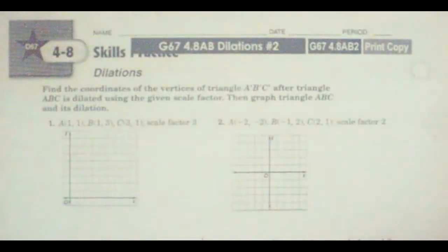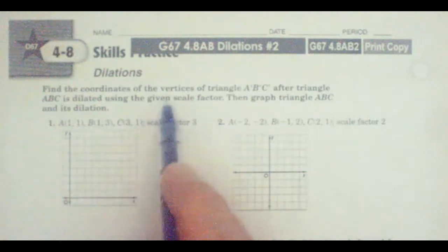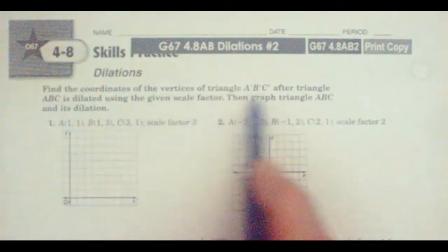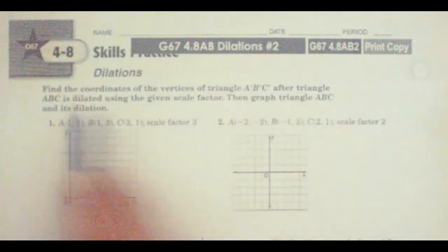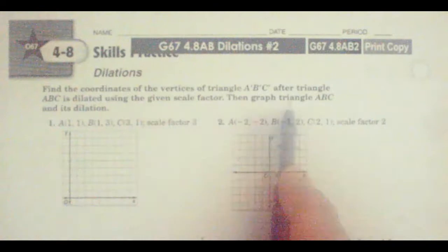Hello. Let's do G67 4.8 AB number 2, the dilation sheet here. So in this first section, we're finding the coordinates of the vertices of triangle A prime, B prime, and C prime after triangle ABC is dilated using the given scale factor. Then graph the triangle.